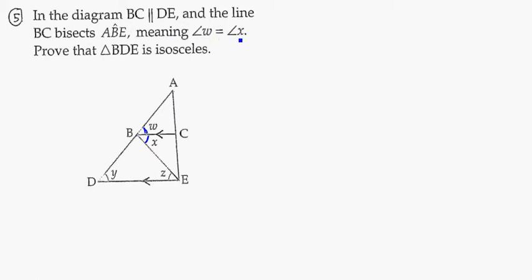And that's what they say, angle W is equal to angle X. And they want us to prove that triangle BDE is isosceles. BDE. So they want us to prove that those two are the same length.